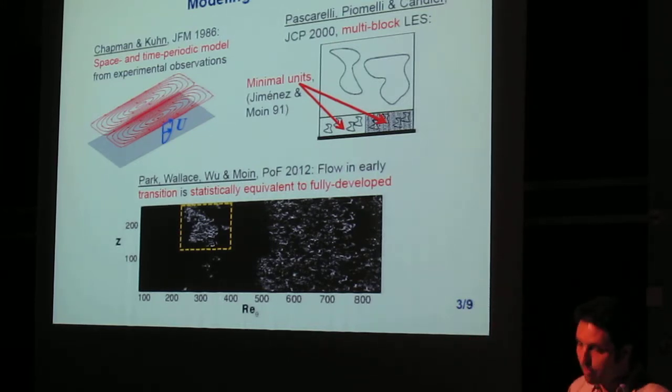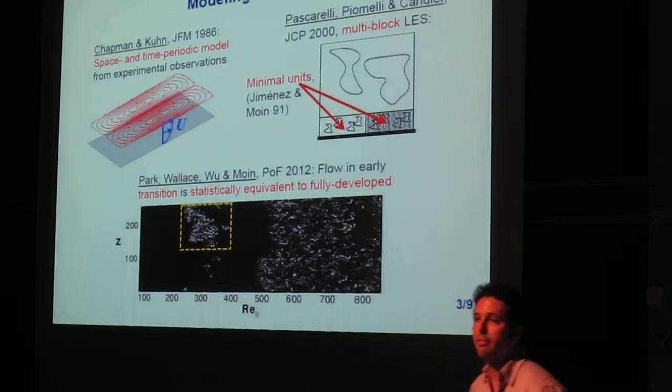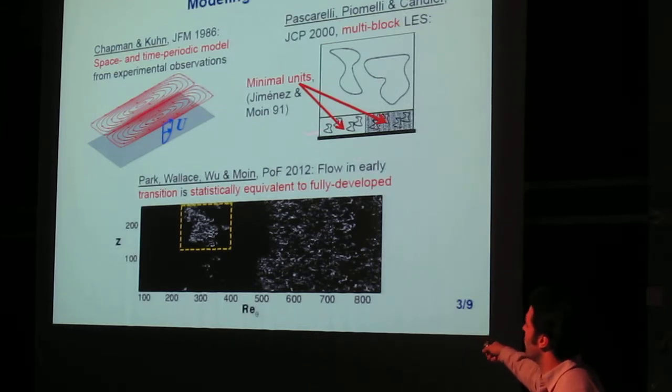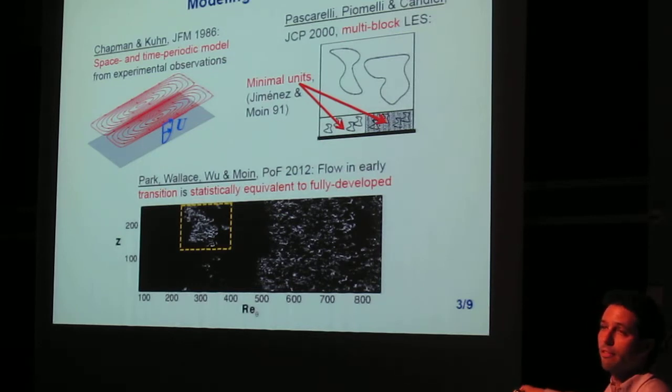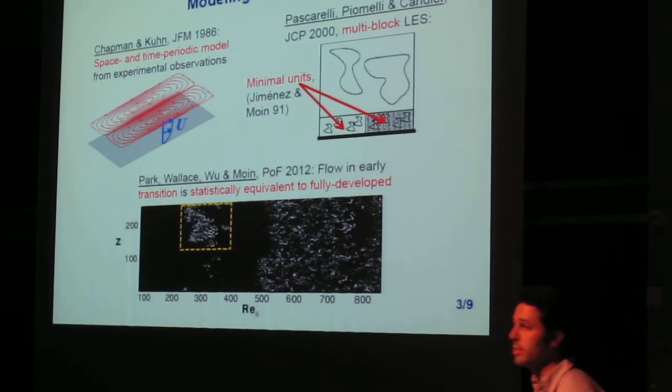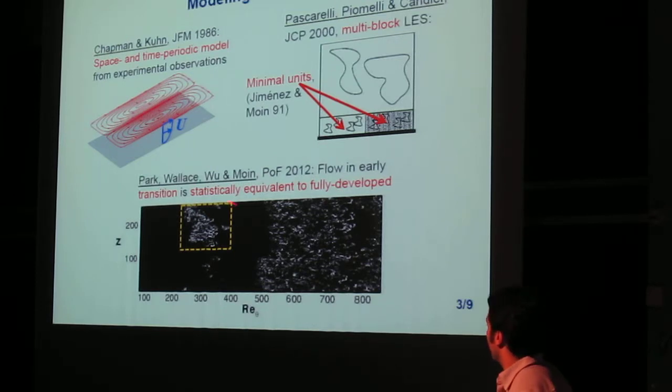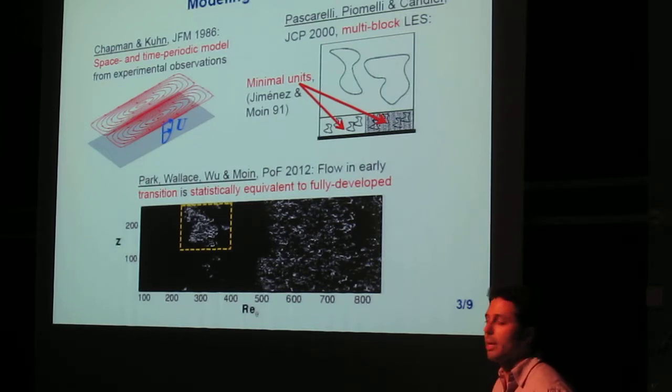Part of the conceptual experiment theme in our project was to test minimal blocks like this, extracted from different flows. There's the famous minimal unit in the channel flow, Jimenez and Moiny. Recently, Jim Wallace at the previous summer program actually looked into the statistics of turbulent spots in bypass transition, and they saw that statistically they are pretty much equivalent to fully developed turbulence at the same Reynolds number. So we could try to use these transitional regions also to extract minimal units from there.